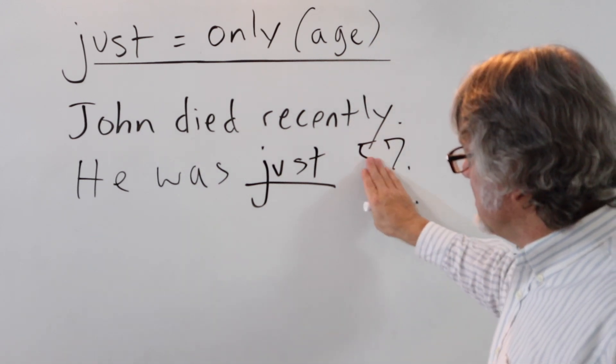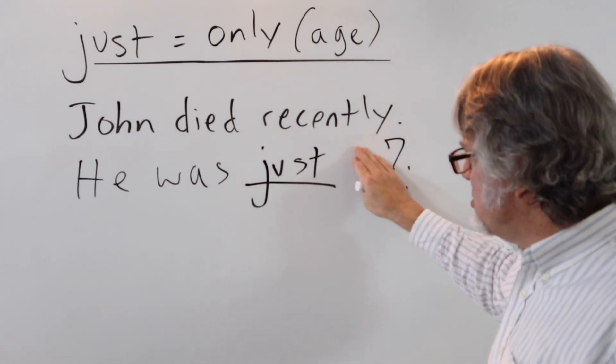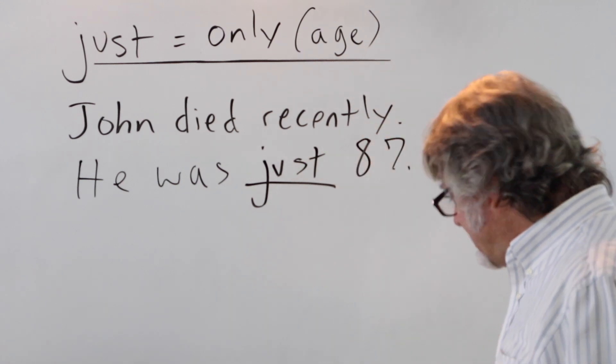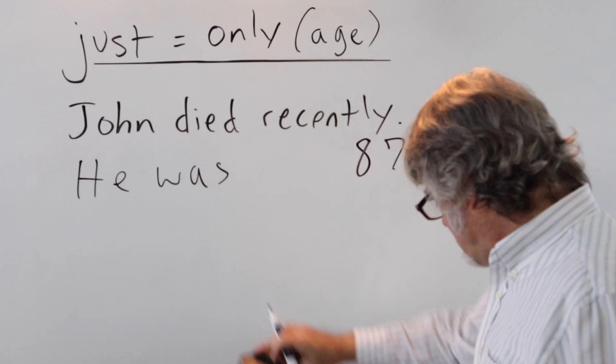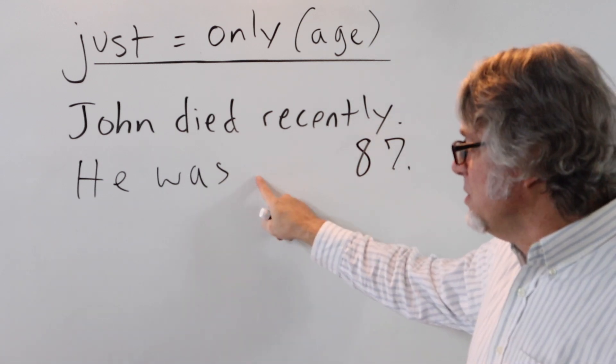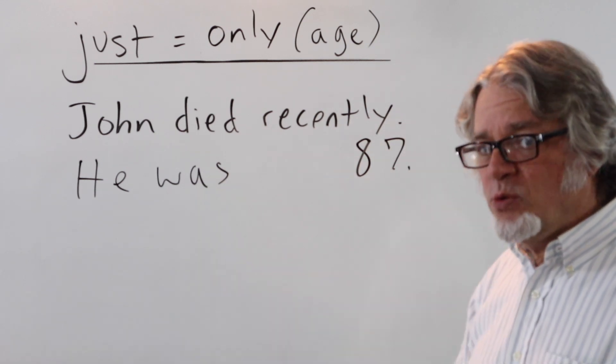But if the age changes to 87, then we're not going to use just. We would simply say he was 87.